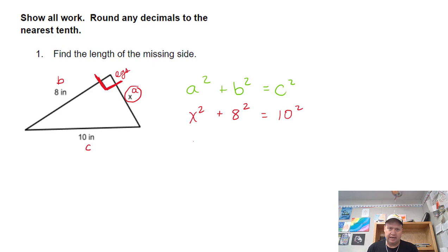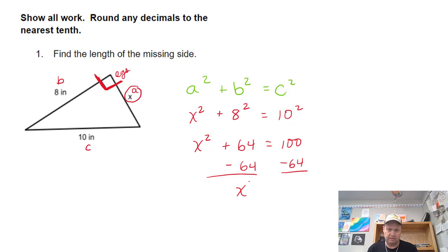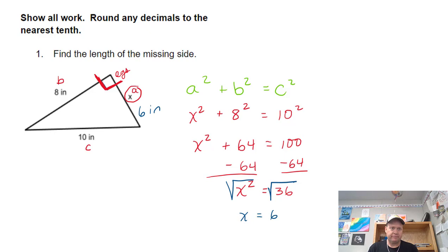To square these out — those are just times-table problems. When we take away 64, we're trying to get x by itself because x is a leg. If I was looking for c, I wouldn't have to do this step, but x squared equals 36. The last step is to take the square root of both sides, and the square root of x squared is x equals 6. So the missing side is 6 inches.